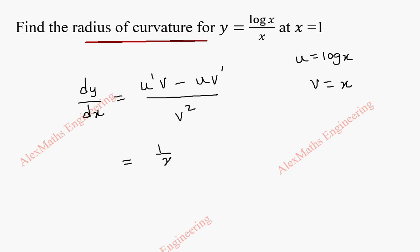u dash is 1 by x into v is written as it is. And again, u is log x, v dash is 1, whole divided by v square is x square. So we can cancel this. So we have 1 minus log x by x square at x equal to 1 is a given point.